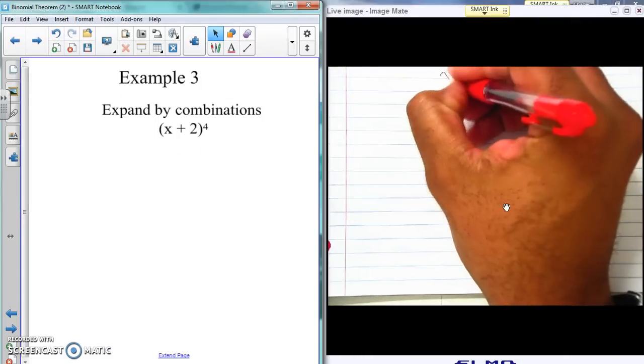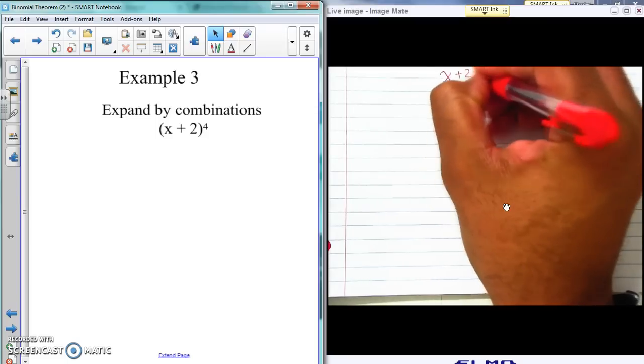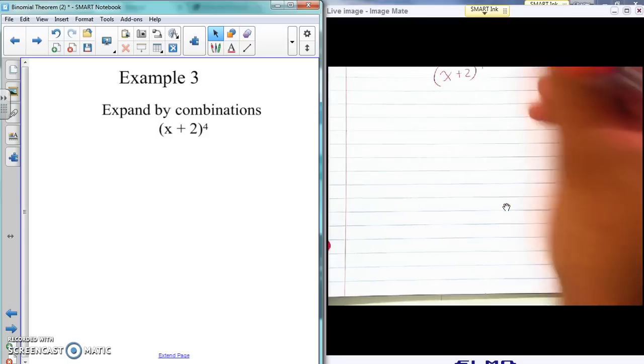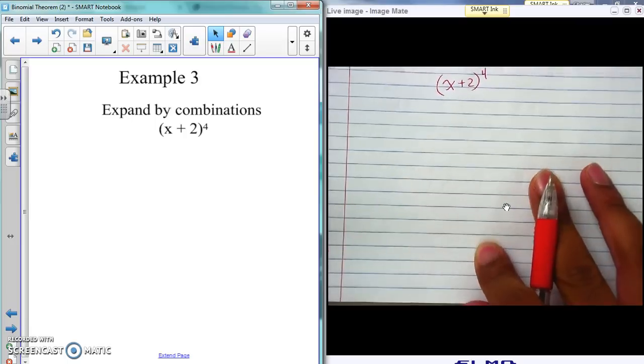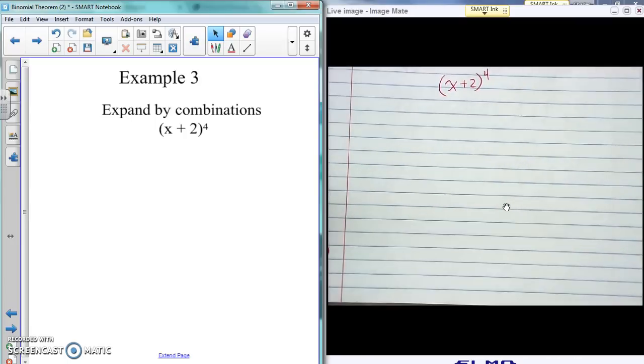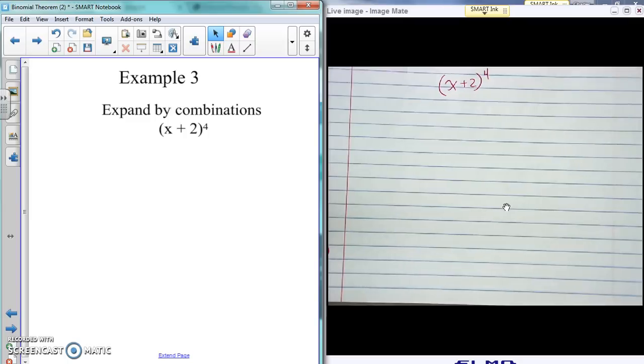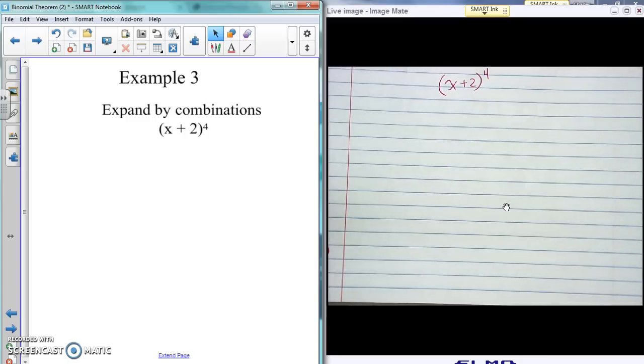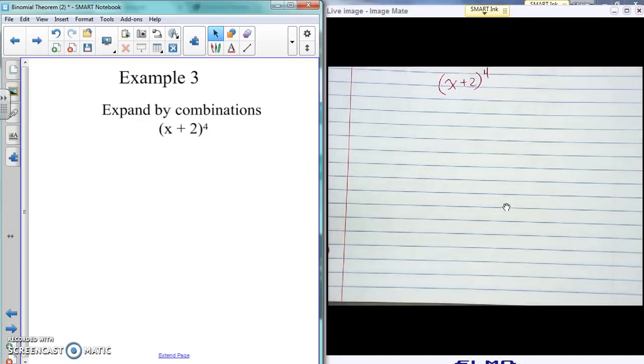So we are expanding (x + 2) to the fourth power. Hopefully you notice that's different on this one than with the other problems we had. The other problems just had x and y. This time we have x and a 2. So we're gonna do everything exactly the same. The only thing that changes is at the very end when we have to do stuff with the two.